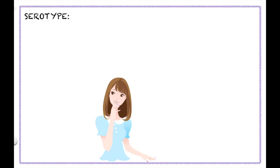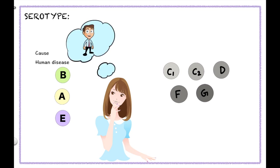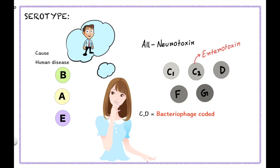Now let's discuss about the serotypes. Based on the light chain there are 8 serotypes: A, B, E, C1, C2, D, F, and G. Among them serotypes A, B, and E commonly cause human diseases. You can remember it like BAE — your toxic BAE — it's just a mnemonic. All serotypes produce neurotoxin except C2 which produces an enterotoxin. Botulinum toxin types C and D are bacteriophage encoded. Here you can see a bacteriophage sitting on a CD, which will help you to remember this point.